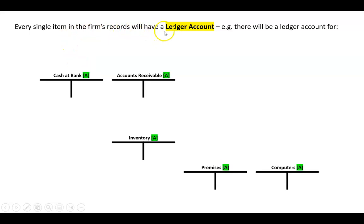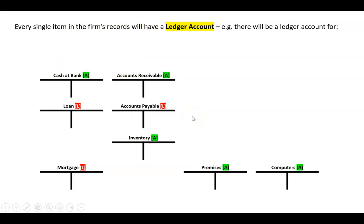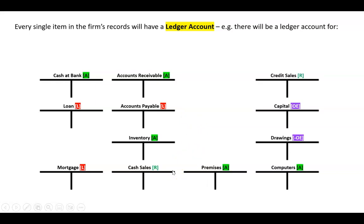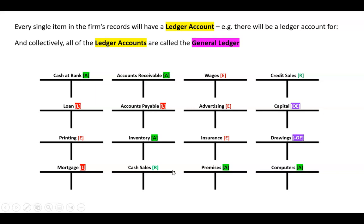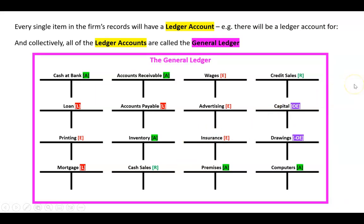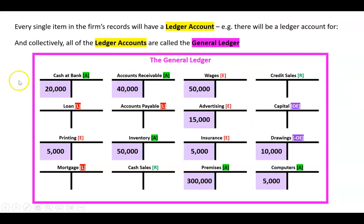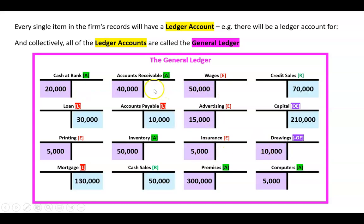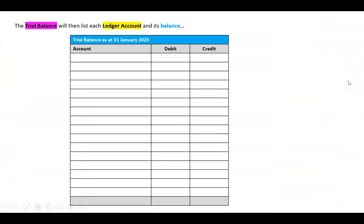Every single item in the firm's records will have a ledger — for all the assets, all the liabilities, all the owners' equities and negative owners' equities, all the revenues, and all the expenses. Together that's called the general ledger. The assets and expenses will have debit balances, and the negative owners' equity as well, while revenues, liabilities, and owners' equity will have credit balances. I want to make sure all my debits equal all my credits.